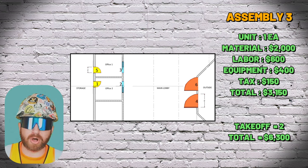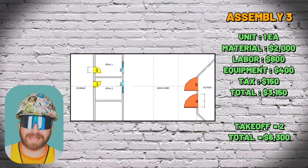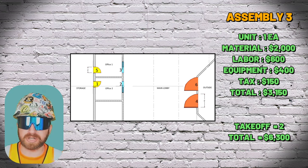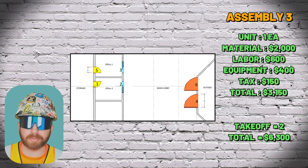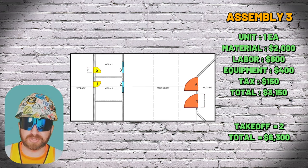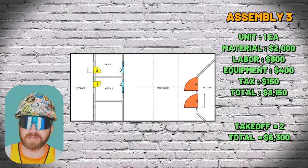The GC takes all of their self-perform estimates, all of the lowest qualifying subcontractor estimates they chased after, all of their prepared general conditions, any applicable allowances and contingency, their fee, and any taxes — and puts all of this together with the schedule, bid clarifications and exclusions, and submits this to the owner to hopefully get awarded the project.